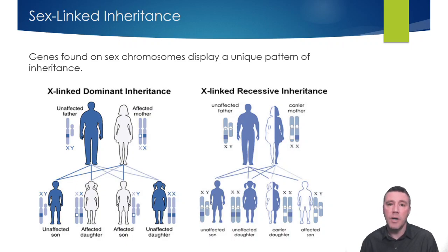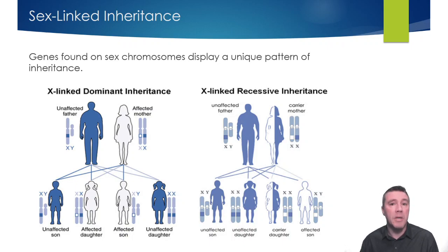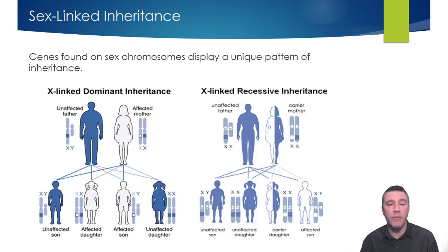In this case, the hypothetical father also has no influence on the potential children for this gene, but the mother, being a carrier, does. A carrier is an individual who does not display the recessive phenotype, but because they carry a recessive allele, they can pass it on. If she passes on the dominant allele, the children are unaffected regardless of biological sex. Passing on the recessive allele to a female offspring produces another carrier, while a male child who receives the recessive allele will display the recessive phenotype.